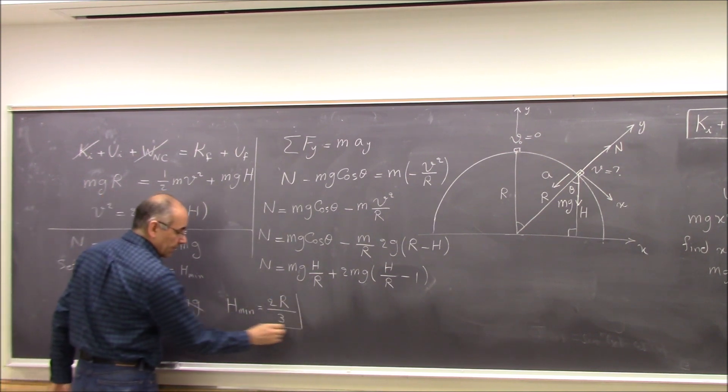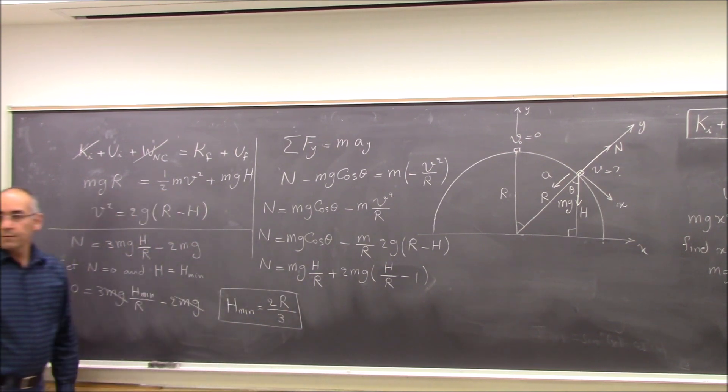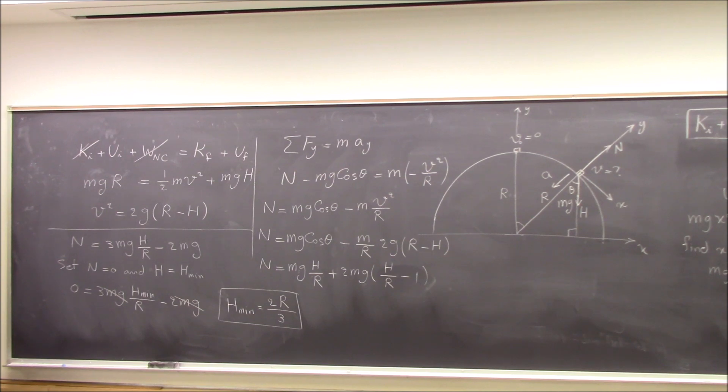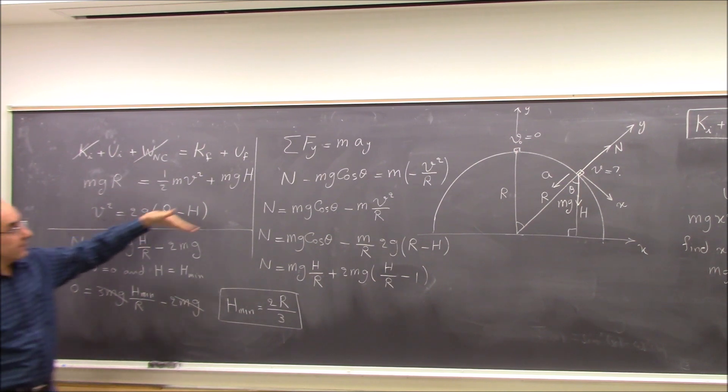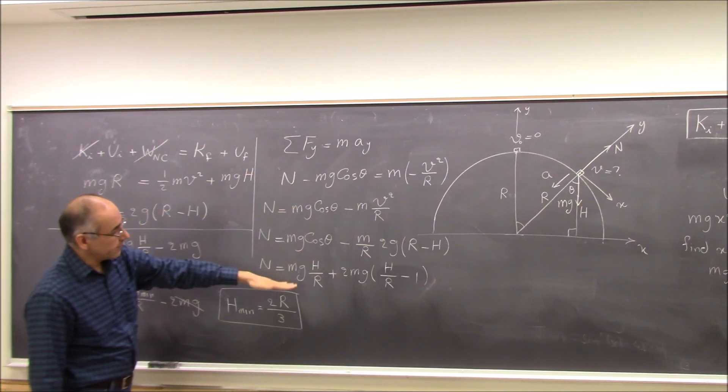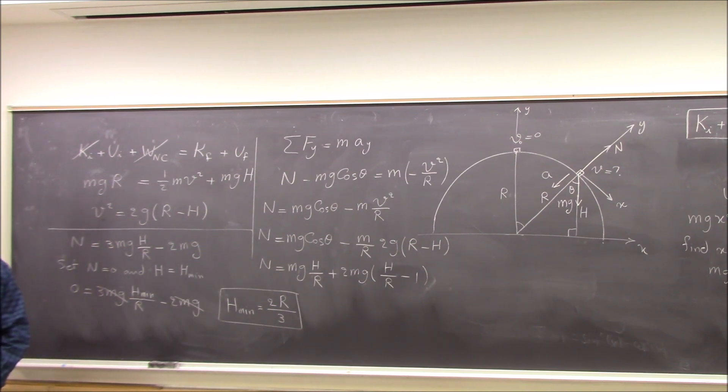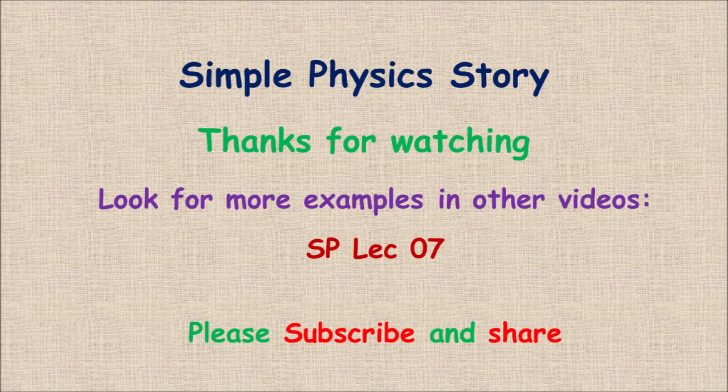That's where it loses contact with the surface. So it's conservation of energy to find how fast it's going. And then Newton's law to see how much normal force there is. And then when normal force is zero, it loses contact.